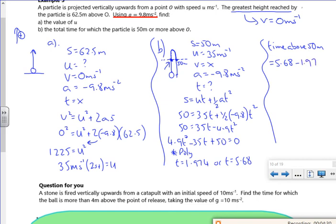Just do that. What's that? Oh, it's 5.168. So 5.168 minus 1.974, which gives us roughly 3.2 seconds. There we go. There's the question for you.